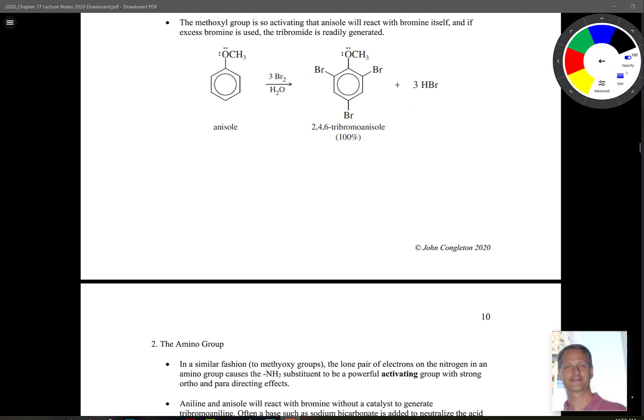Well, in fact, the methoxy group is so activating that anisole will react with bromine just by itself, without any catalyst. If excess bromine is used, then tribromide is often generated. So here we have bromine, water, anisole, and we have ortho and para, both products, I guess both positions formed in this one product. What we typically do, though, is we might use one equivalent. So we only substitute either at ortho and another product at para.